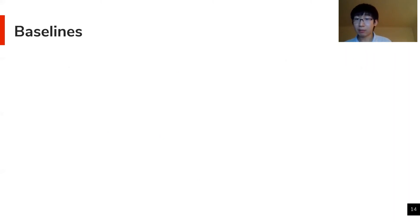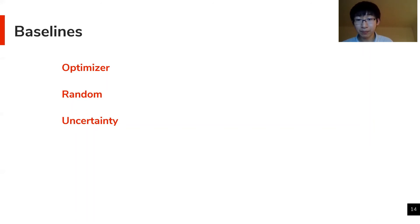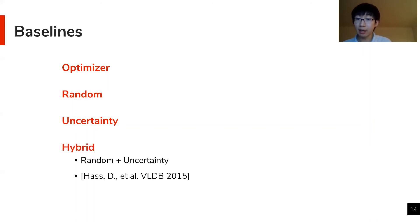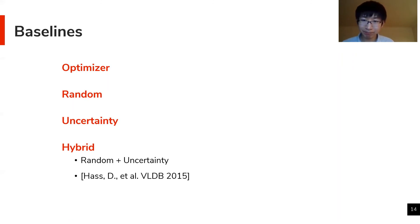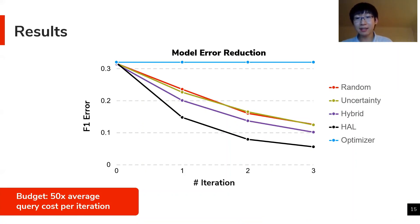We compare HAL, our holistic active learning strategy, against nine different baselines. Representative baselines include: directly using the query optimizer's cost estimation, randomly selecting data points, the canonical uncertainty-based AL strategy, and a hybrid strategy from the database crowdsourcing domain that evenly splits the budget and uses random and uncertainty sampling for each half. The x-axis shows the iteration number and the y-axis shows the F1 error, which is a more robust version of error rate.